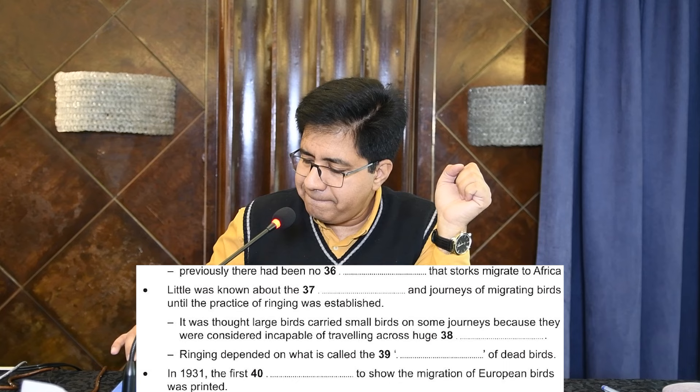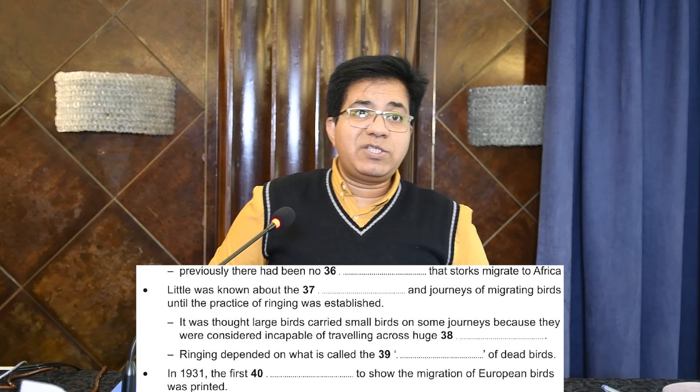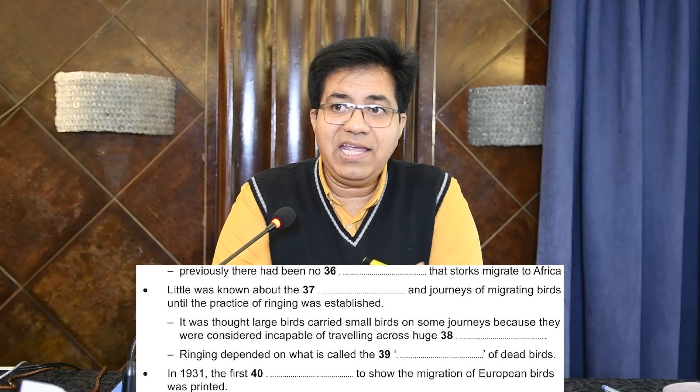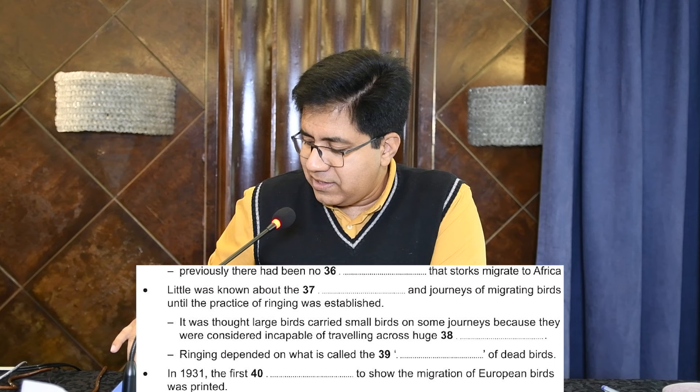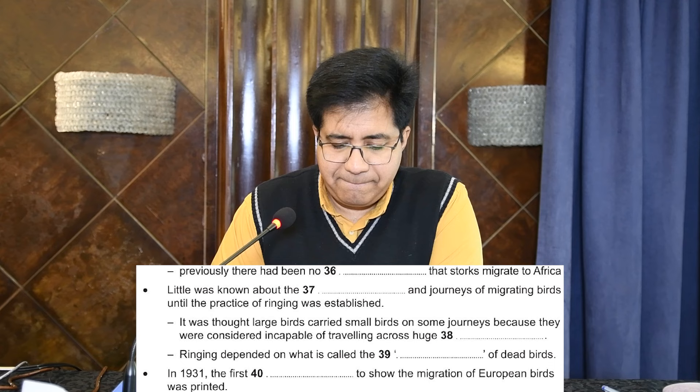The last question asks about 1931, when the first dash showing the migration of European birds was printed — 'printed' means 'published.' The audio says: 'In 1931, an atlas was published showing where the most common species of European birds migrated to.' The answer is 'atlas,' spelled A-T-L-A-S. Since it was published in 1931, it was the first one — confirming 'atlas' is correct.